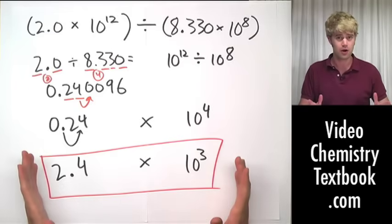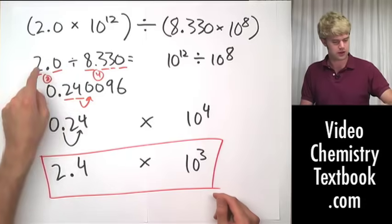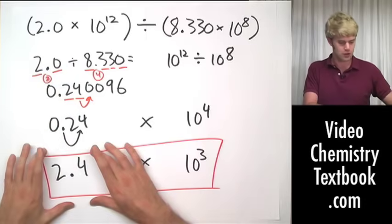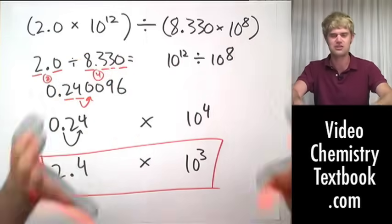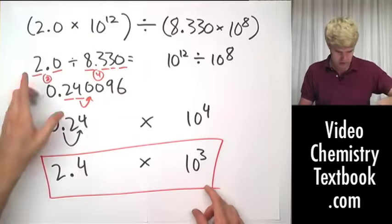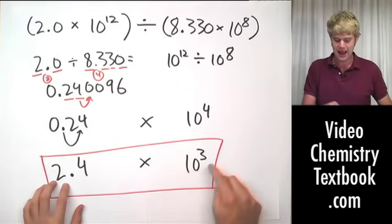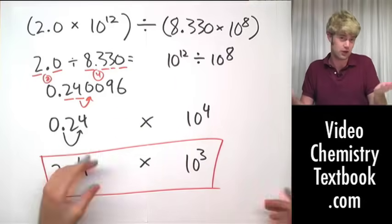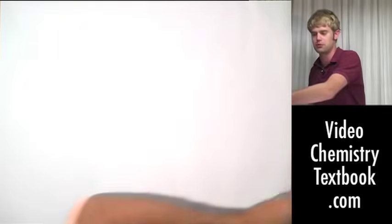To quickly recap: we did the division, we paid attention to significant figures just like we normally would, and in doing the rounding we paid no attention to the 10 to the 12th and 10 to the 8th. Don't let it confuse you — just do the division or the multiplication the same way you would any other problem, then figure out the 10 to the whatever power at the end. This was division; the same would be true for multiplication.